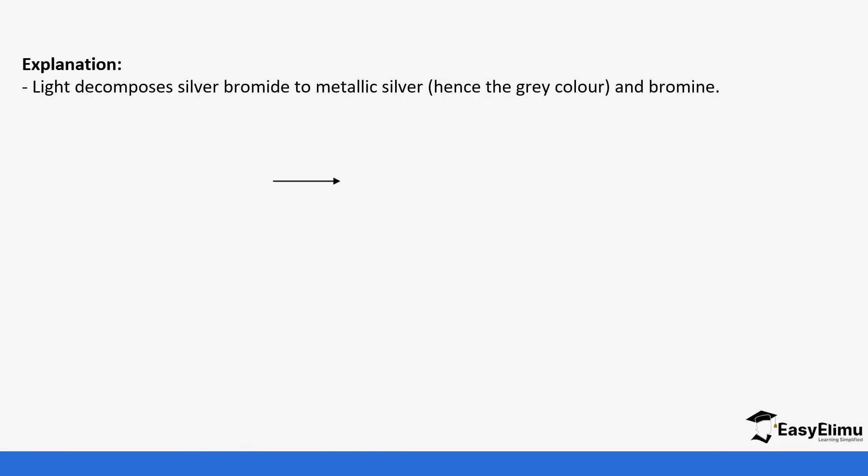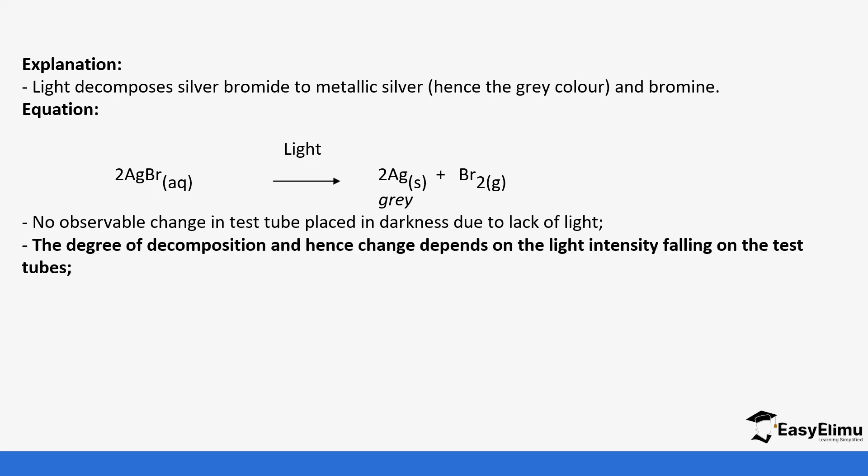The reason this happens is because light decomposes silver bromide to form silver and bromine gas. When there is no observable change in the dark, it means we didn't have enough energy to break those bonds between silver and bromide ions. The degree of decomposition depends on the light intensity falling on the test tube. The rate of decomposition of bromide will increase with light intensity.